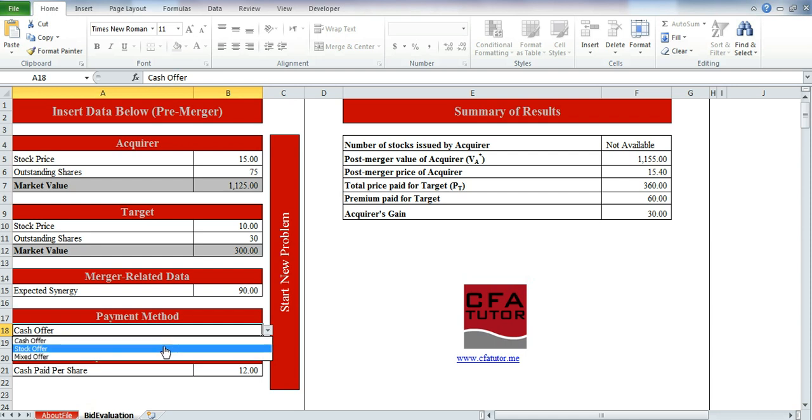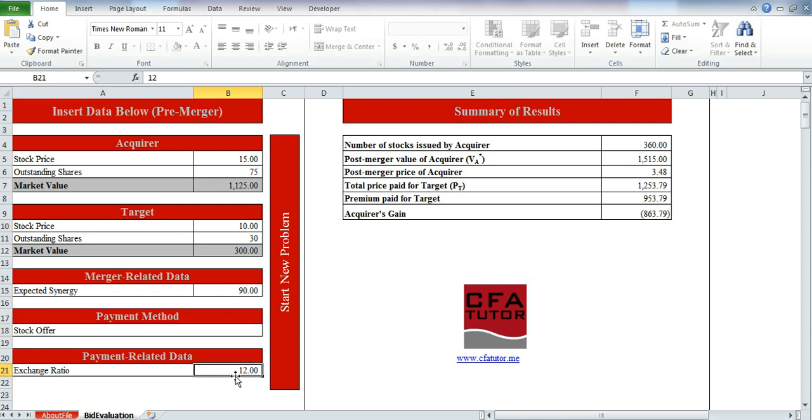If we want to evaluate the stock offer, all we have to do is to change the number here to an exchange ratio of 0.8. And we have the new results over here. And finally, if we would like to have a mixed offer, we select the mixed offer and we enter a cash of $6 and an exchange ratio of 0.4. And here we go. We have a summary of the results as well.